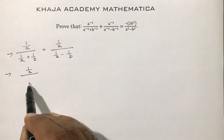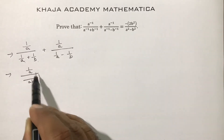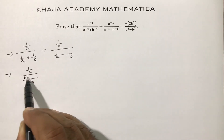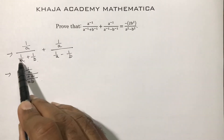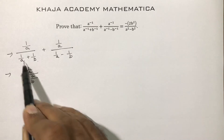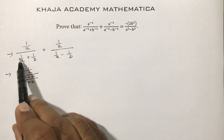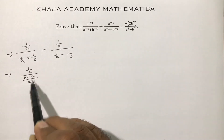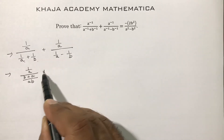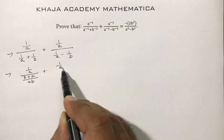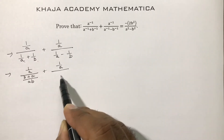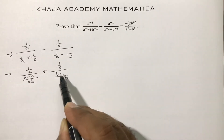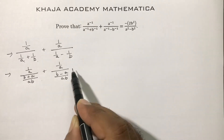Now in this, the numerator 1/a is as it is. In the denominator, take LCM as ab. So you will be left with (b + a)/ab in the first denominator, and in the second denominator (b − a)/ab.